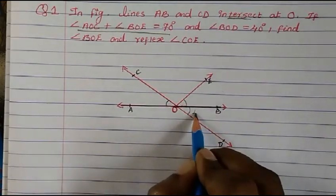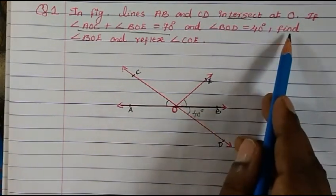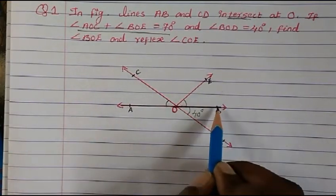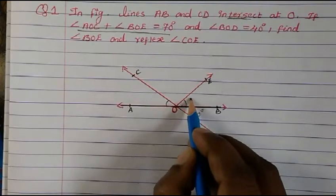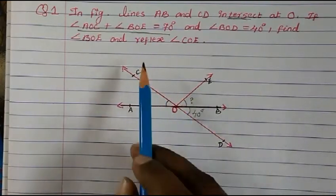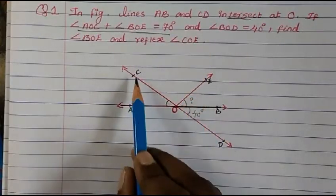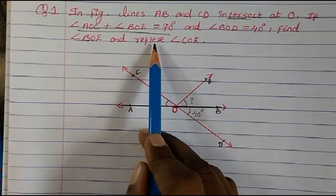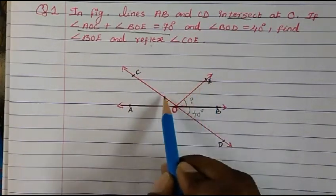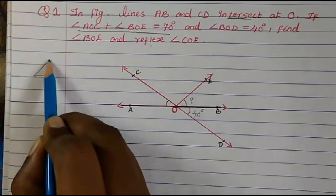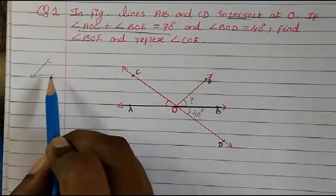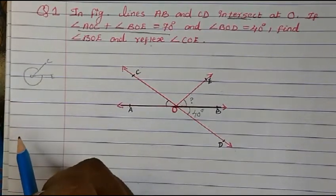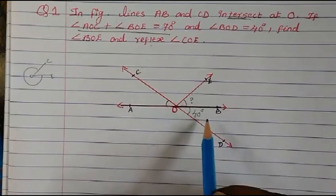We have to find angle BOE and the reflex angle COE. Remember, a reflex angle is more than 180 degrees and less than 360 degrees. So reflex COE refers to the larger angle — the whole region going around from C to E the long way.